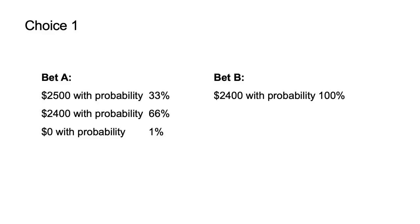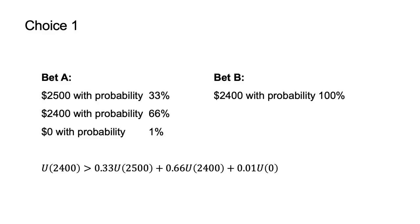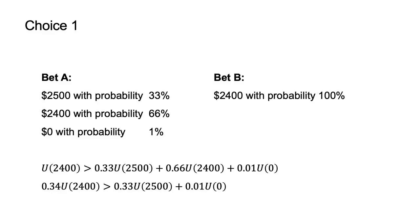Let's examine this pair of preferences, with over 80% of experimental participants selecting B in choice one and C in choice two. According to expected utility theory, if an agent selects B, the expected utility of B must be greater than the expected utility of A. That is, U(2400) > 0.33·U(2500) + 0.66·U(2400) + 0.01·U(0), which simplifies to 0.34·U(2400) > 0.33·U(2500) + 0.01·U(0).